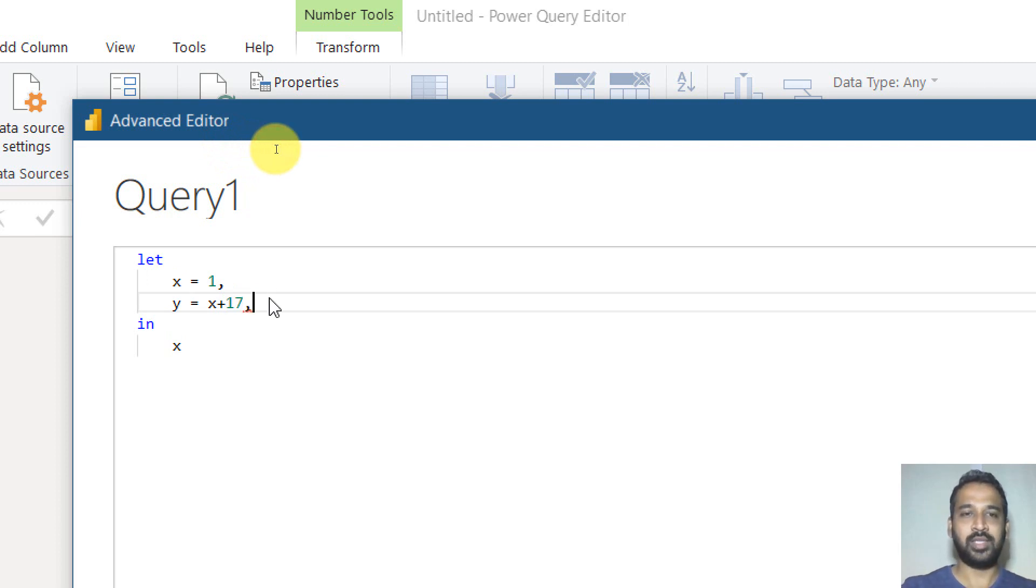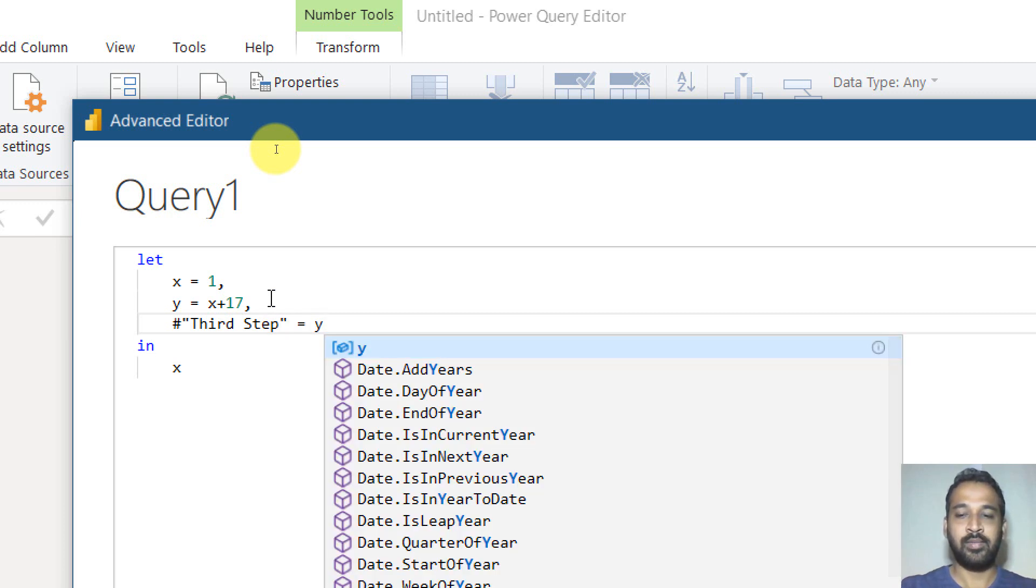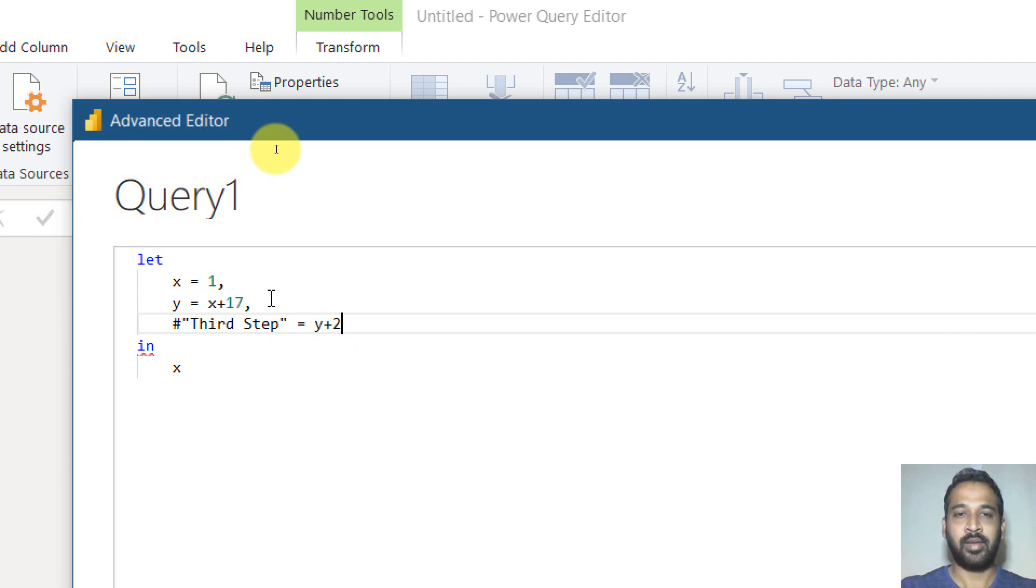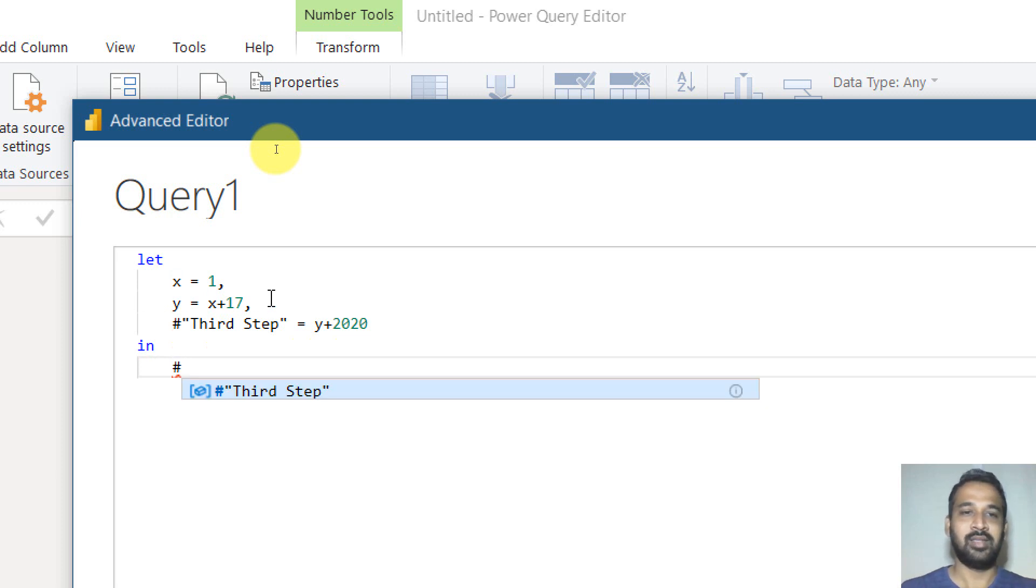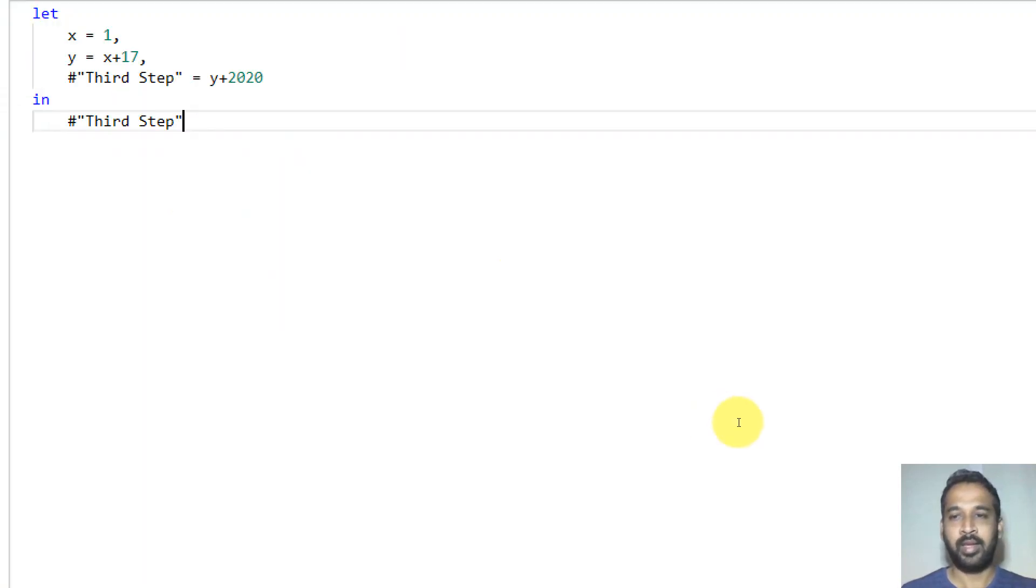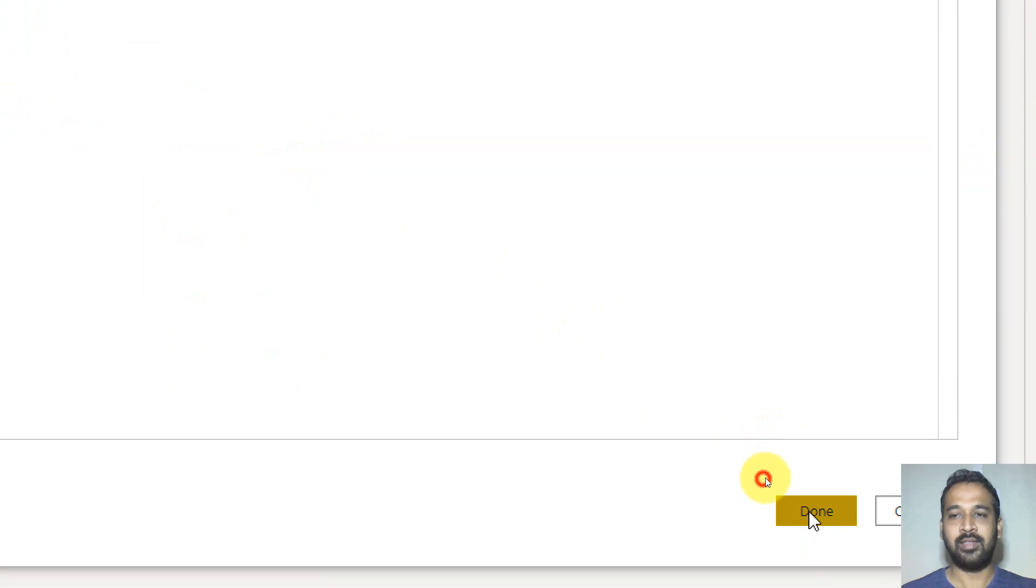The reason is, click on advanced editor. This is the first step. And this is basically the query. And we have written this value here as an output. So the power query transformation, it will not return this as an output. It will just return up to this step. Now, if you want to add a new step like here, we need to type it as a hash double quote and third step.